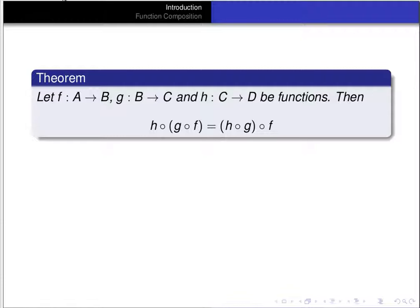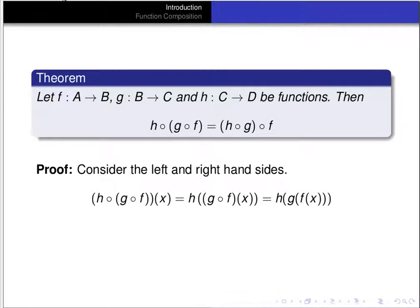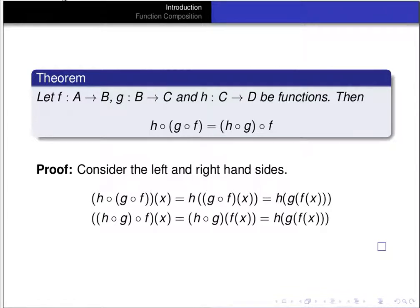It's important to recognize that function composition is associative. The left-hand side h ∘ (g ∘ f) of x gives h(g(f(x))), and the right-hand side (h ∘ g) ∘ f of x first computes f(x) then applies h ∘ g, giving h(g(f(x))) — they come out to the same value. Although function composition is associative, it's important to recognize that it's not commutative: f ∘ g is not equal to g ∘ f in general.